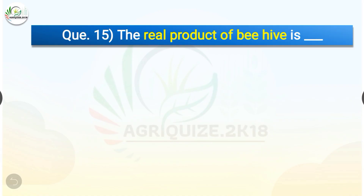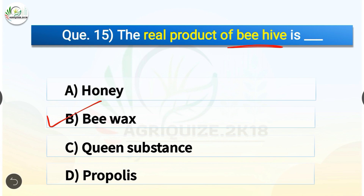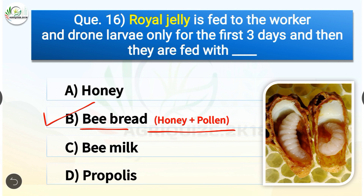Question number fifteen: The real product of beehive is which of the following? The options are: honey, bee wax, queen substance, or propolis. The correct answer is option B — bee wax. The real product of beehive is bee wax. Question number sixteen: Royal jelly is fed to the worker and drone larvae only for the first three days, and then they are fed with bee bread. Bee bread is the mixture of honey and pollen.